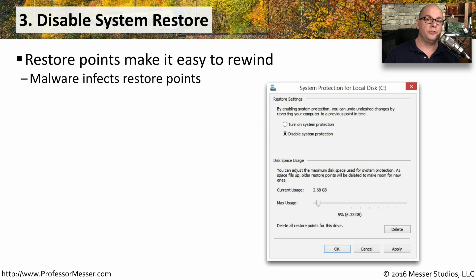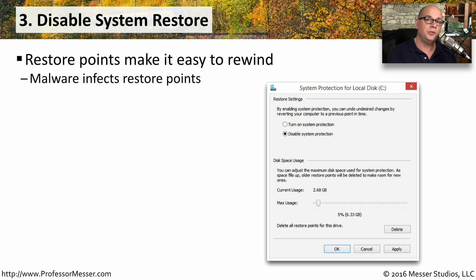In Windows, your next step should be to disable system restore. Normally, if you have a configuration problem, you would use system restore to go back to an earlier point in time. And it makes sense that if you're infected with malware or a virus, you would want to go back to a point in time where you didn't have that particular infestation.